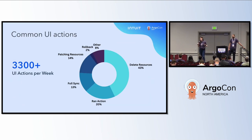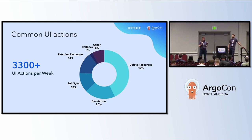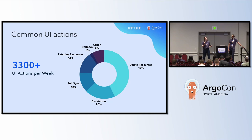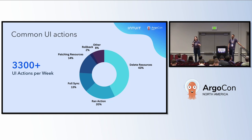When approaching this problem, we really needed to understand what actions developers do using the Argo CD UI. Looking at this donut chart, you can see that the most common action people are doing internally at Intuit using the Argo CD UI is deleting resources. We know that is the action causing us problems, but it's important to look at all actions happening in Argo CD so we can ensure our solution continues to enable developers to manage their applications successfully and safely.